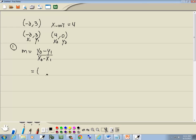Now before you plug in your numbers, it's a good idea to go through and put parentheses in. It helps reduce sign errors. Now y2 we said was 0, y1 is 3. x2 is 4, and x1 is negative 2.